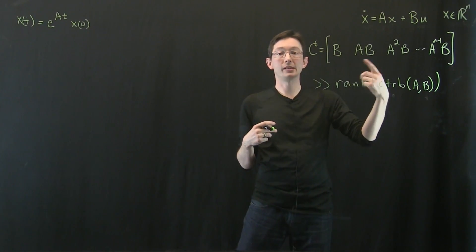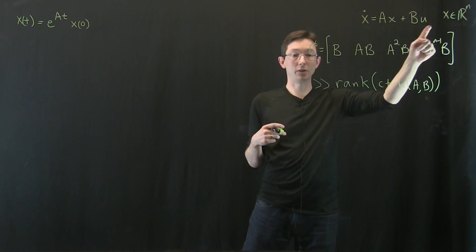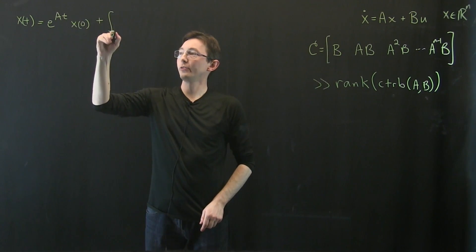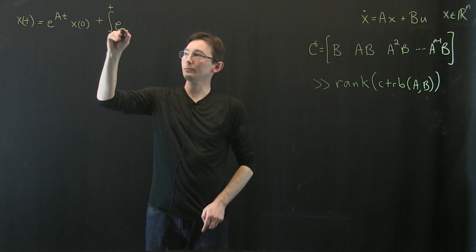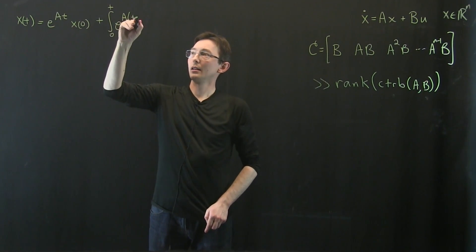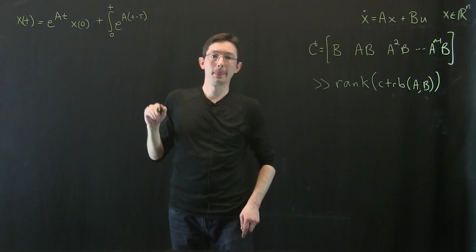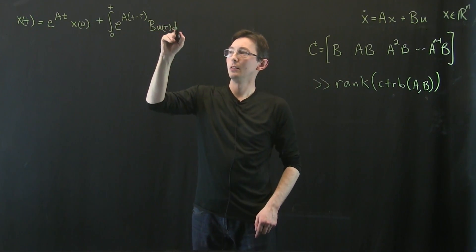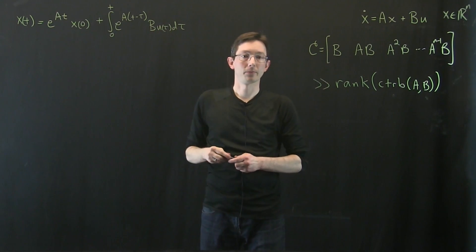And now in the absence of an initial condition, if we just had control, we would also get this plus integral from 0 to t, e to the At times B u of tau d tau.